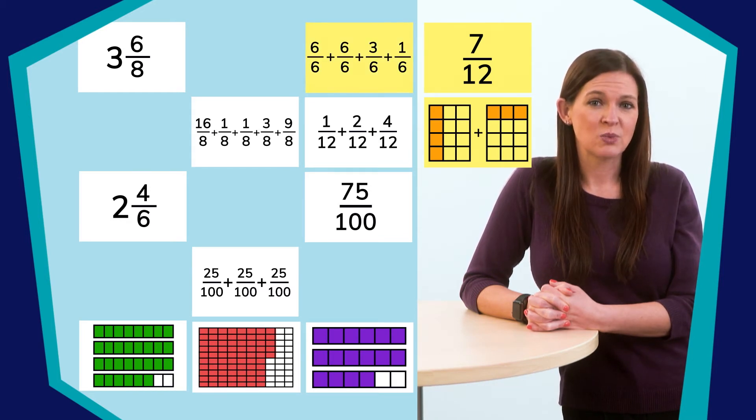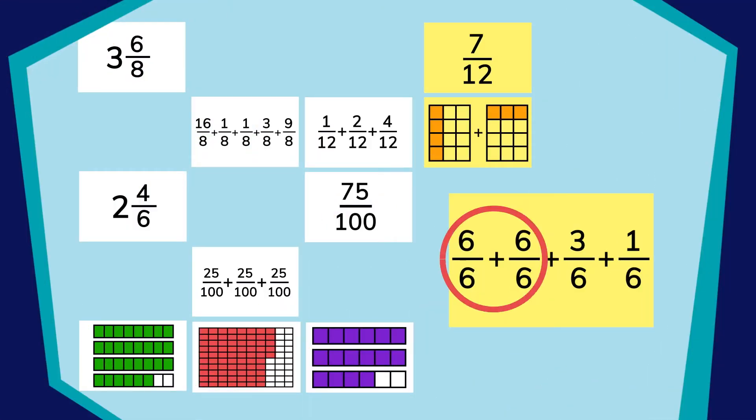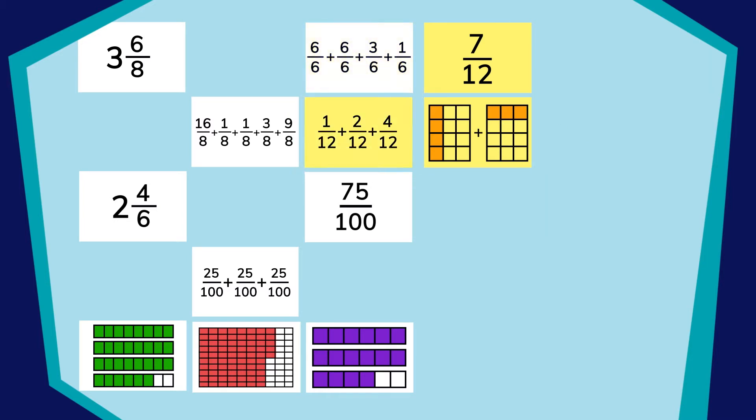I see an expression with sixths, and I know twelfths and sixths are related, but this looks like it had some whole numbers in it. Oh, here's one that has twelfths for the denominator. Let's see. We have 1 twelfth plus 2 twelfths, that's 3 twelfths, plus 4 twelfths. Yes, we found it!